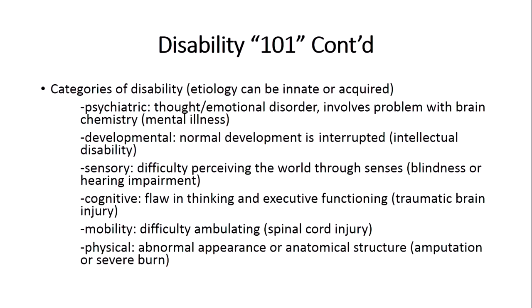The fourth category is cognitive disabilities, which involves a flaw in thinking and executive functioning, typically occurring with traumatic brain injury — a trauma-induced event that injures the brain and limits thinking and executive ability. There are also mobility disabilities, involving difficulties in getting around and ambulation, typically with spinal cord injuries where persons are no longer able to walk and require a wheelchair or assistive device to ambulate.